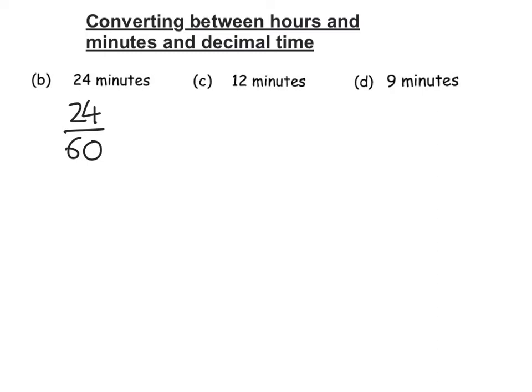The number that divides into 60 and 24 is 6, so 24 divided by 6 is 4, 60 divided by 6 is 10, so we've got 4 tenths of an hour, and 4 tenths as a decimal is 0.4.